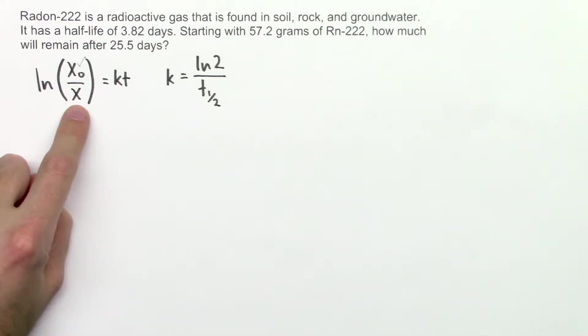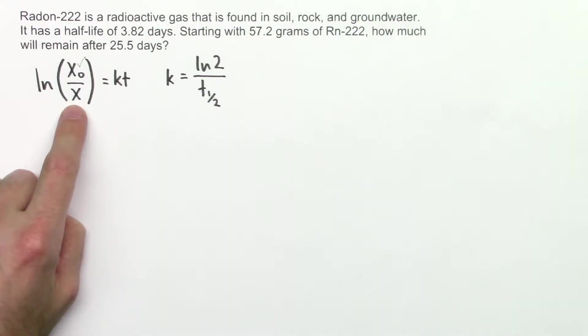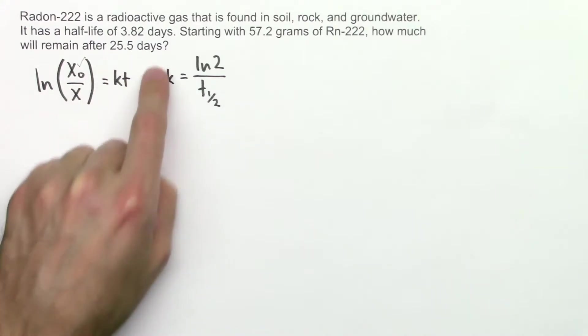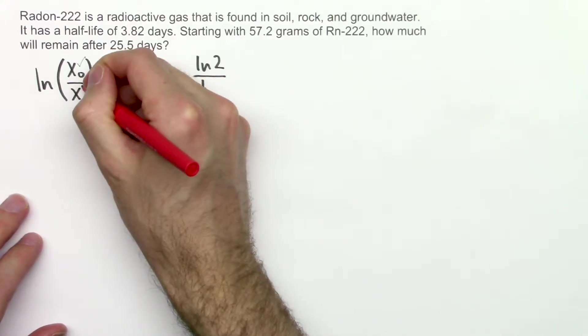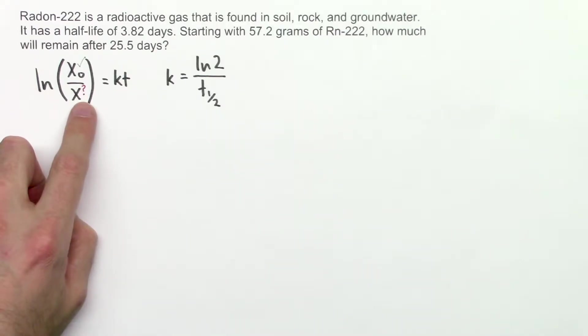Then down here, x. x is the amount of the substance that we have after a certain amount of time. And that amount of time is t. So after time t goes by, we're left with x amount of the substance. Do we know this? No. This is what we're going to be solving for because we're asked how much will remain after this amount of time. So I'll put a little question mark here.